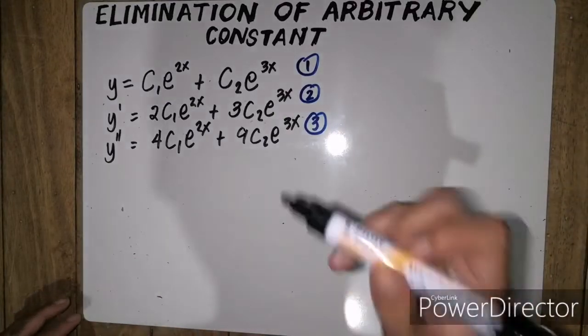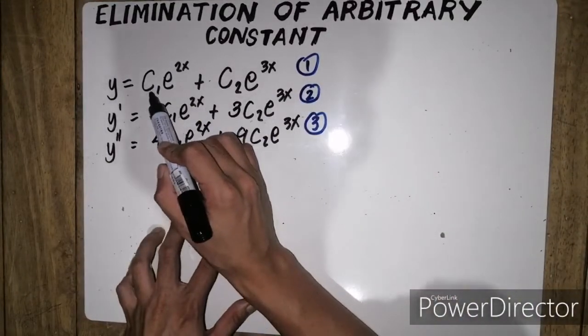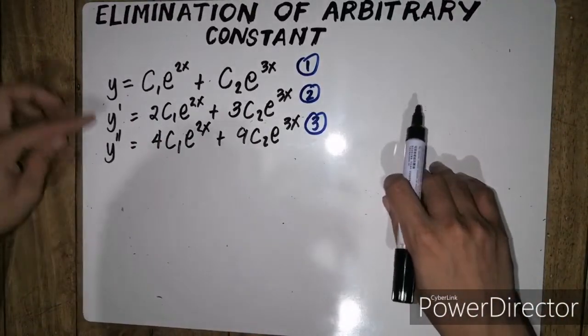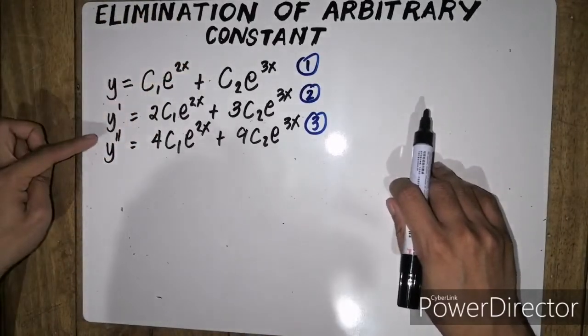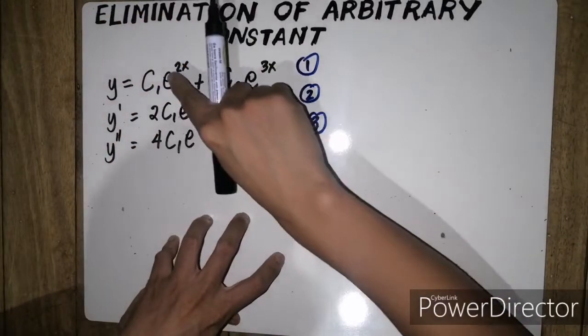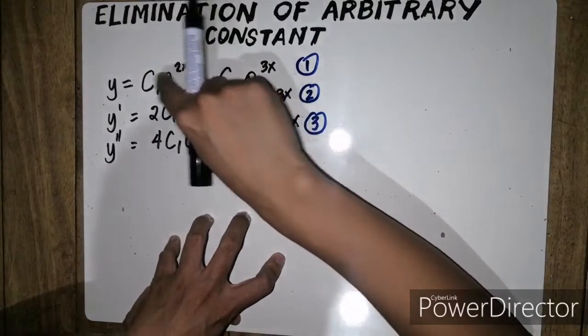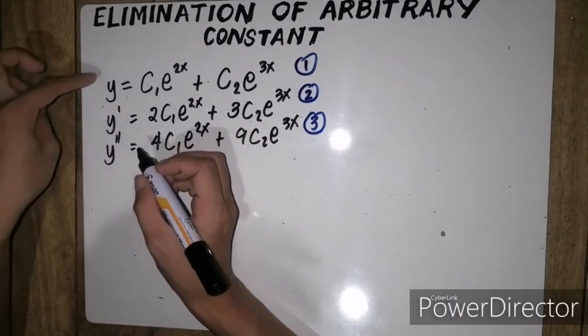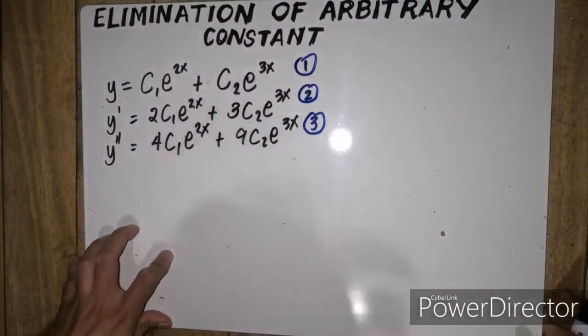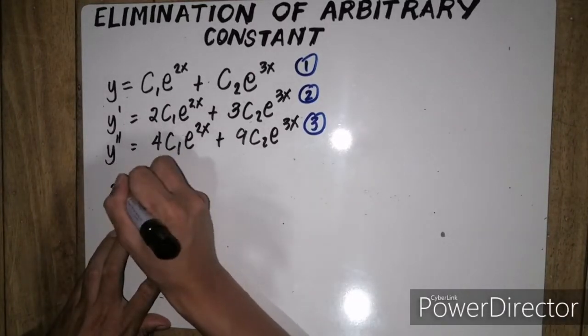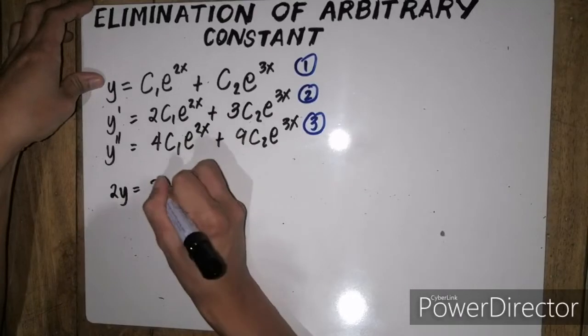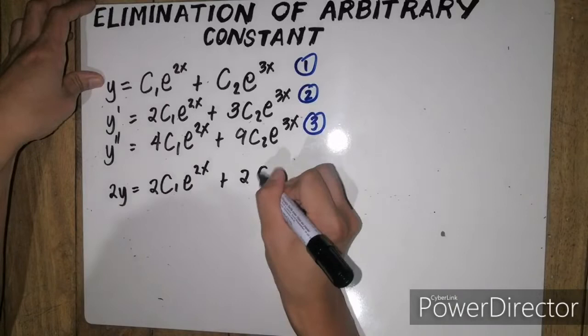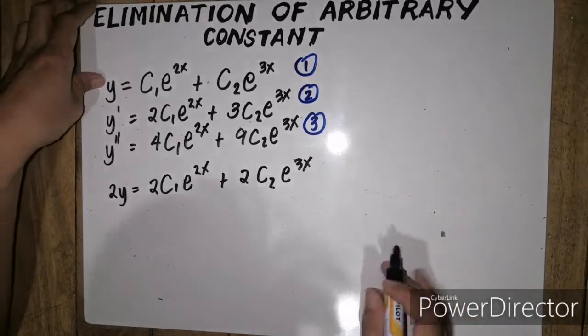After that, our goal is to remove this arbitrary constant. Ang gagawin ko ay, kukunin ko yung first equation minus sa second equation. So para ma-cancel ko dito si first arbitrary constant, i-multiply ko yung buong equation na yun by 2. So we have, 2y equals 2 c1e to the 2x plus 2 c2e to the 3x.